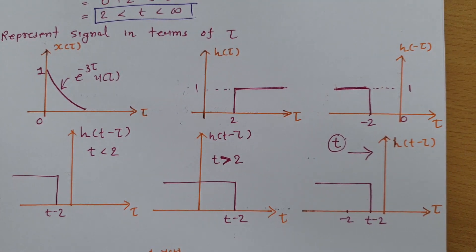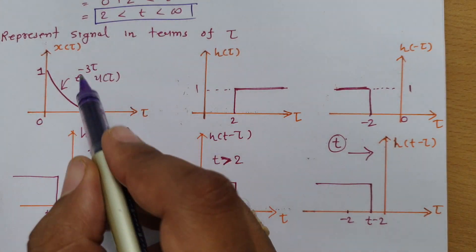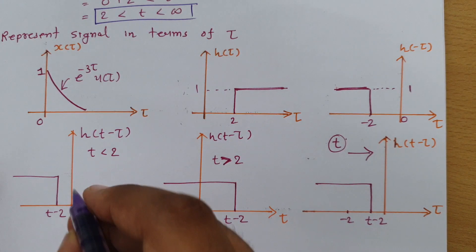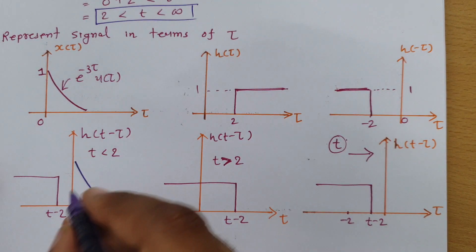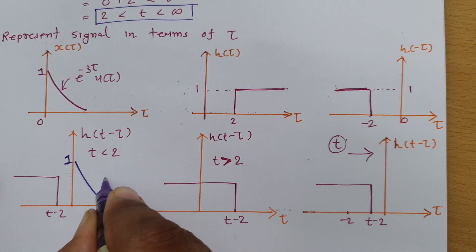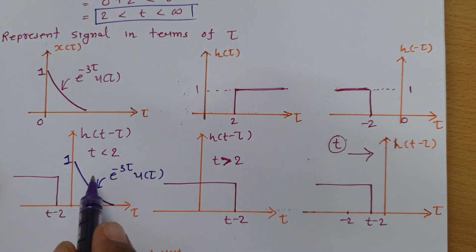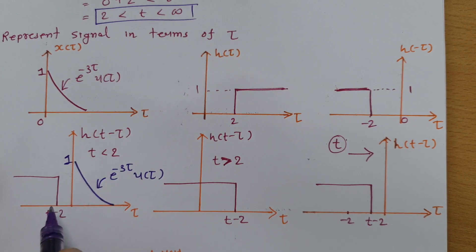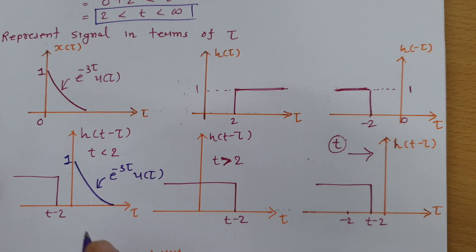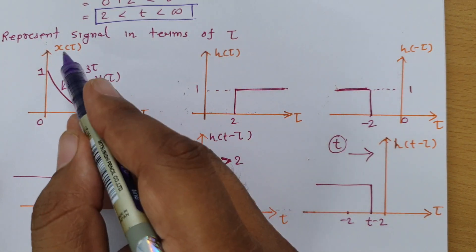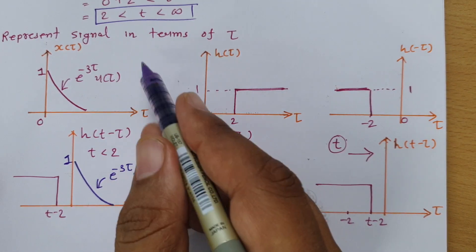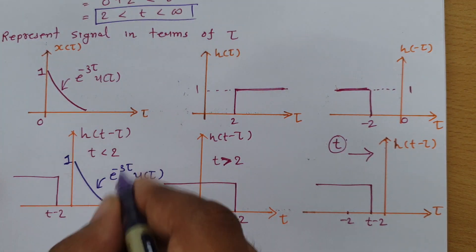Now we need to multiply x(τ) by h(t-τ). x(τ) starts from 0 and goes to infinity, and equals e to the power minus 3τ into u(τ). For the case where t is less than 2, h(t-τ) stays in the negative region where x(τ) is zero, so the resultant of the multiplication of these two signals is 0. Therefore, convolution for t less than 2 equals 0.